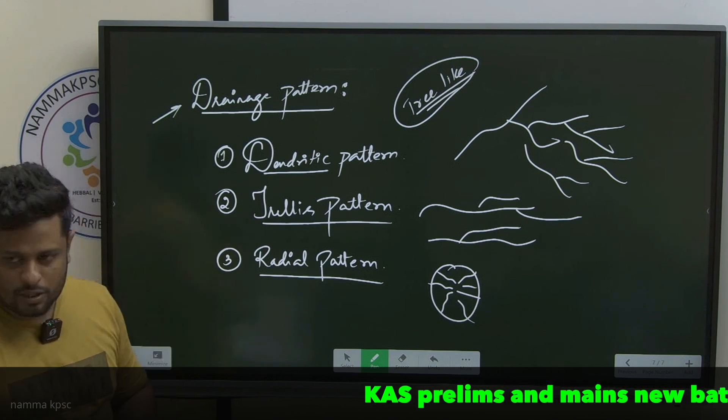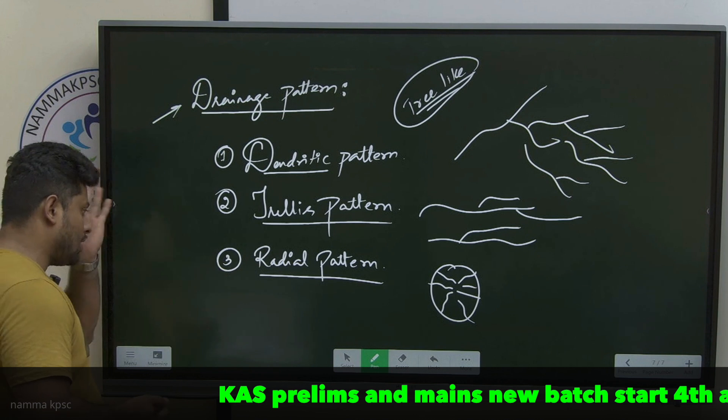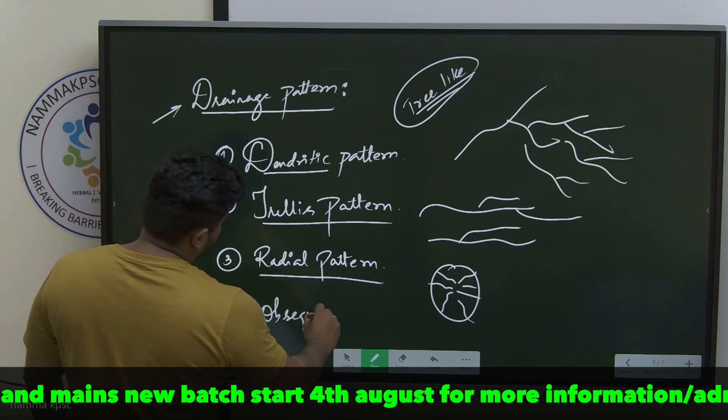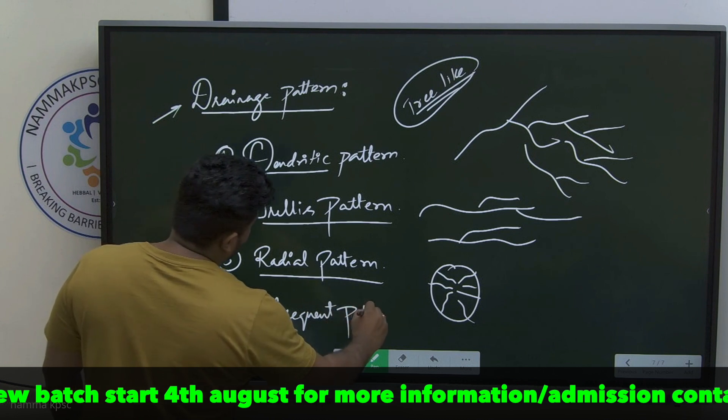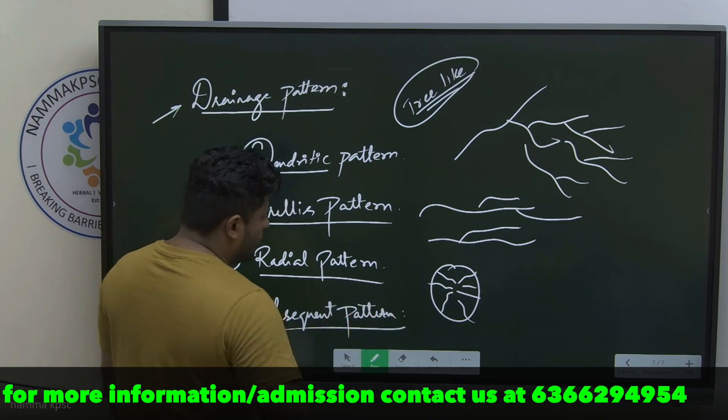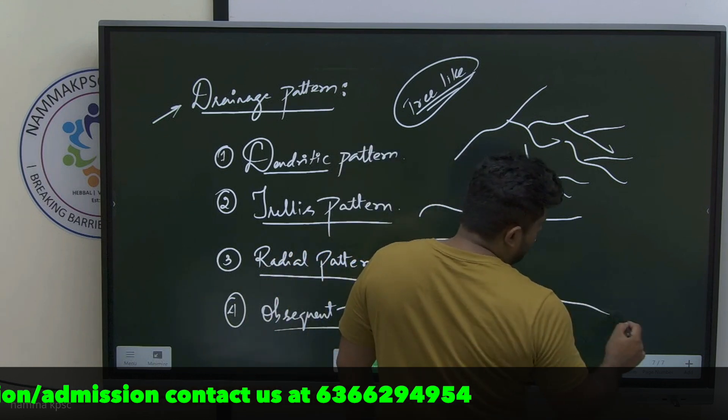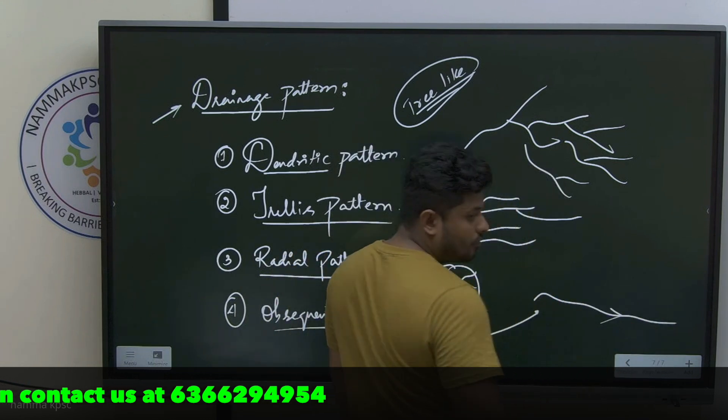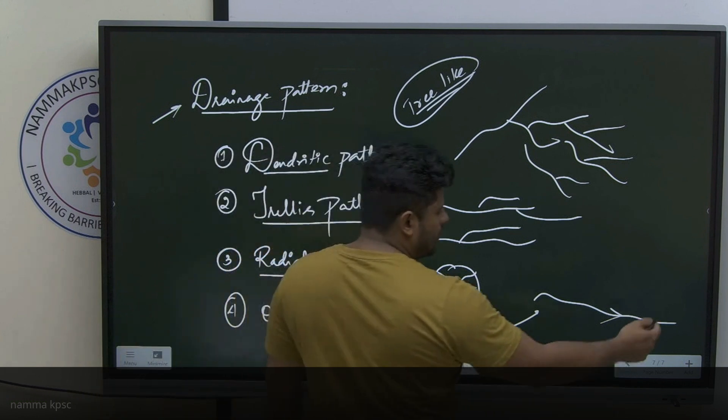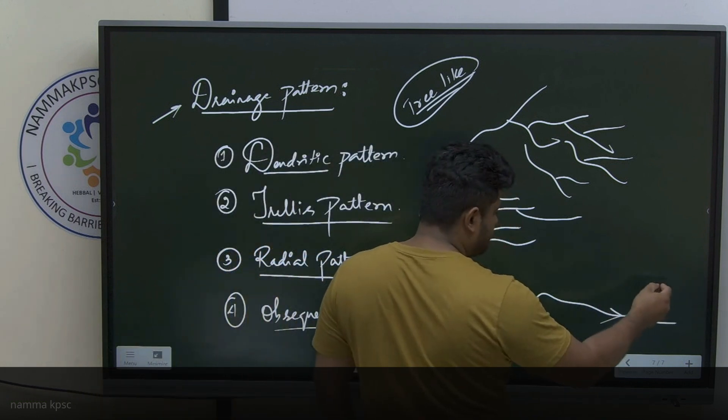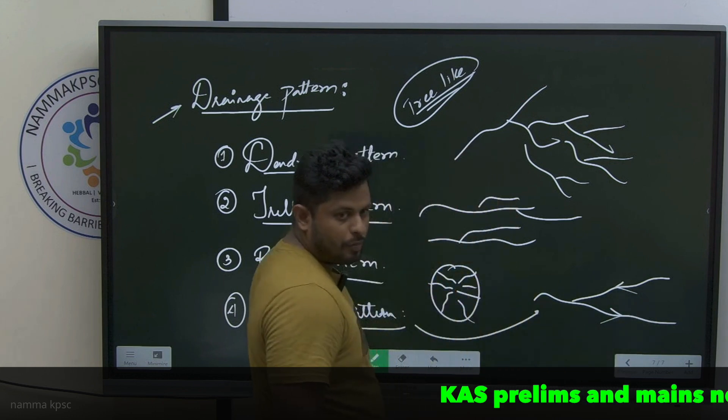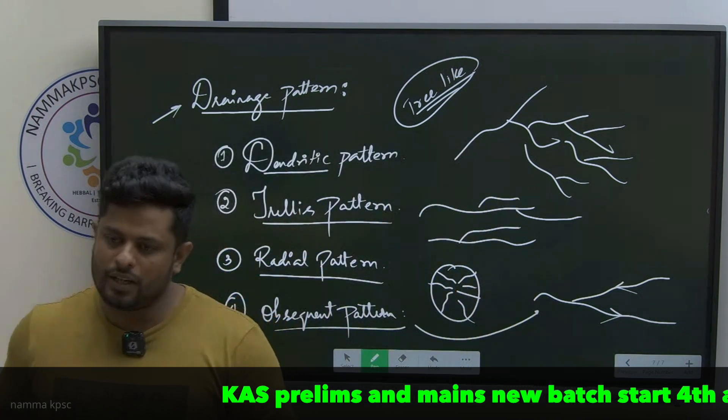Trellis pattern, dendritic pattern, radial drainage pattern, and one more pattern is applicable to the state of Karnataka - that is obsequent. Obsequent pattern is that pattern where a tributary joins the main channel in opposite way. Obsequent means opposite - the tributary joins the main channel, and that is one pattern that is seen in India.